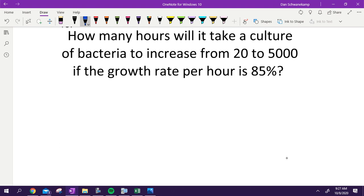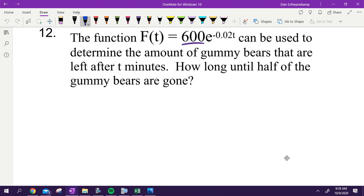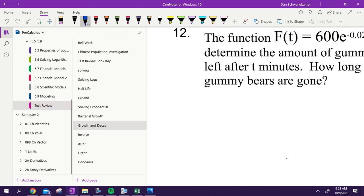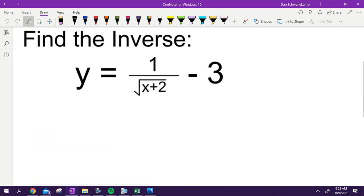Ran out of time a little bit. Let's just look through these last few that we didn't get to. Growth and decay. Here's an equation. You start off with 600 gummy bears. How long until you have half of them? All you would have to do is plug 300 in right there and then solve. That's not any different than the last one we did.